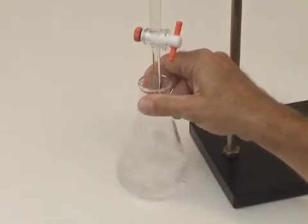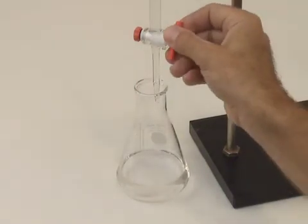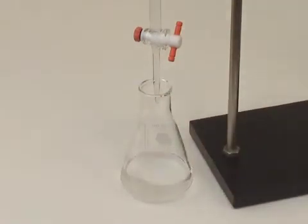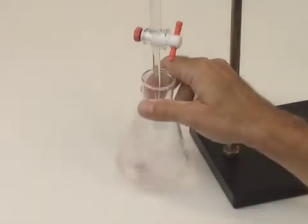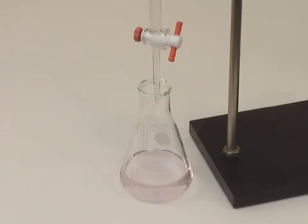The end point is reached when there is any faint color that persists upon mixing. Don't forget to write down the volume at this point. So there you have our end point, and that concludes this video on titration techniques.